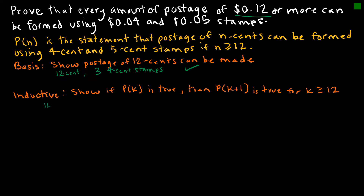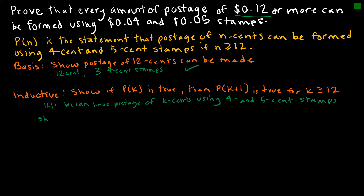For my inductive step, my inductive hypothesis is that we can make postage of k cents using four and five-cent stamps — so we're assuming that is true. I then have to show that assuming I can make postage of k cents, I can also make postage of k plus one cents using four and five-cent stamps.